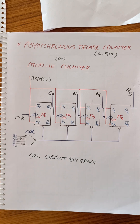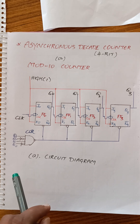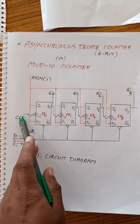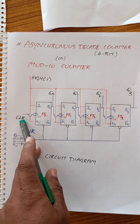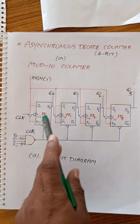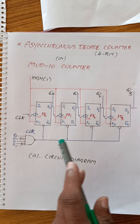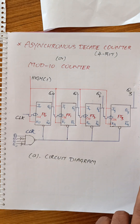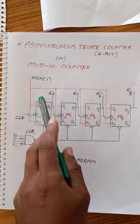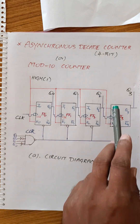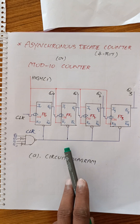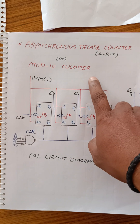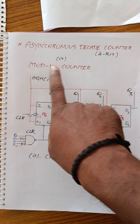The initial clock pulse is applied. Remaining flip-flops receive the preceding output as their clock — this is the asynchronous serial clock arrangement. JK inputs are all at high level. Now let us see the truth table for the asynchronous decade mod-10 counter.